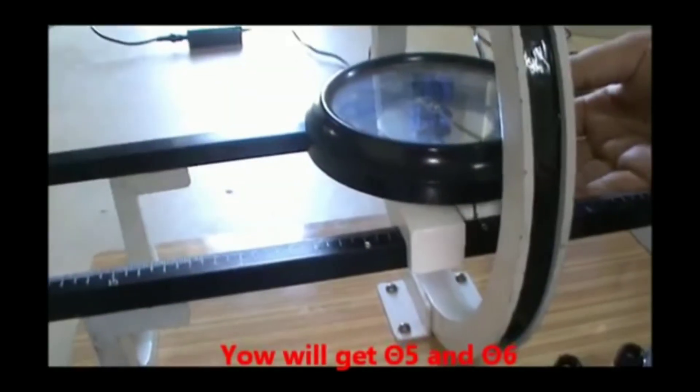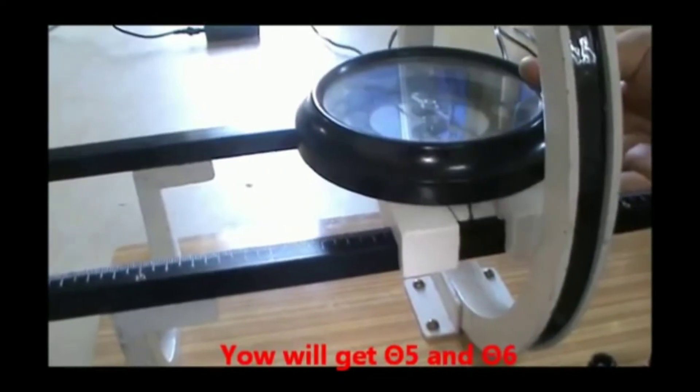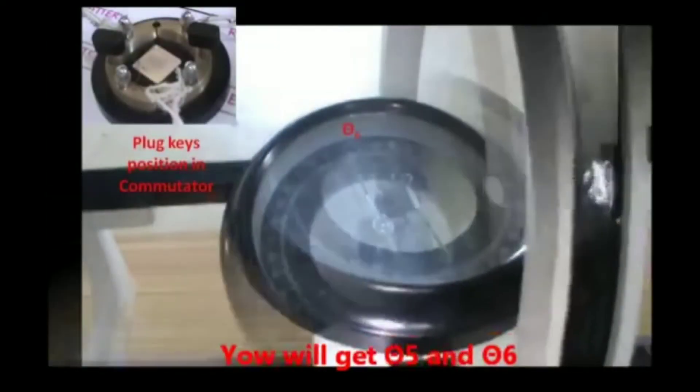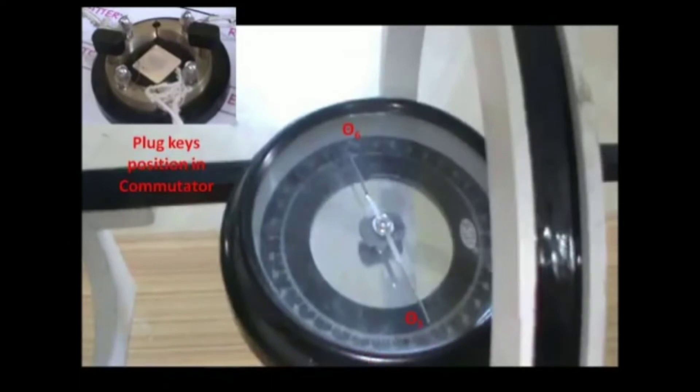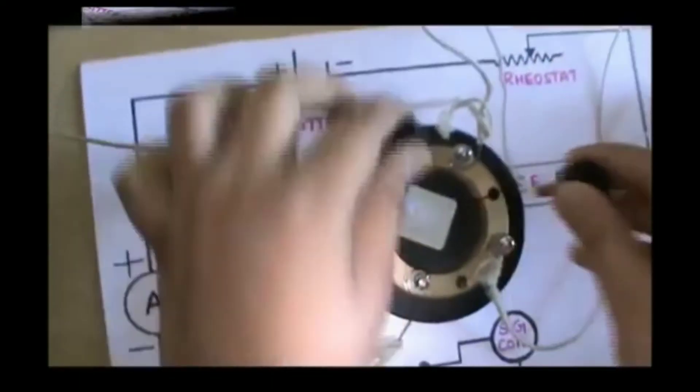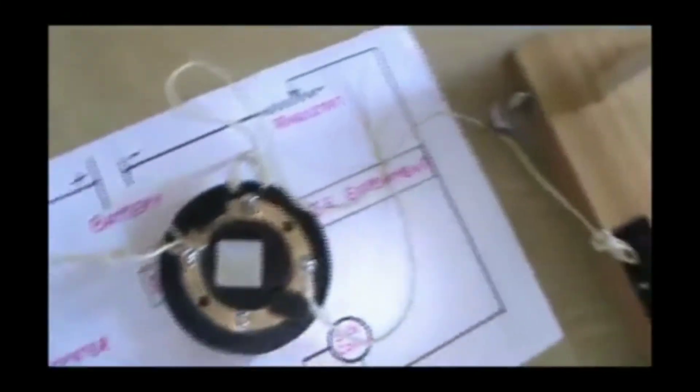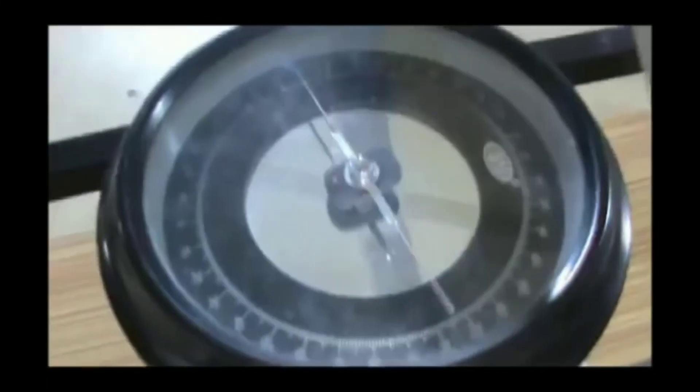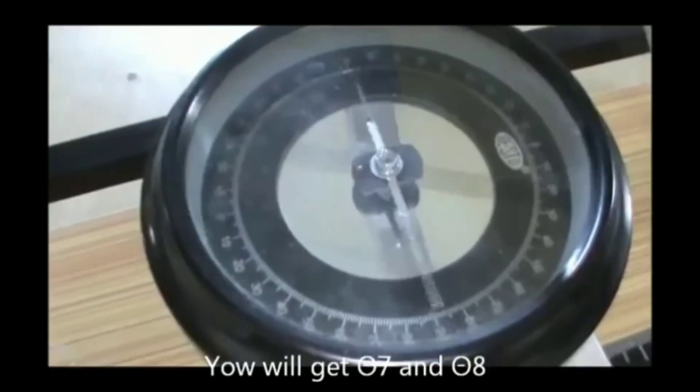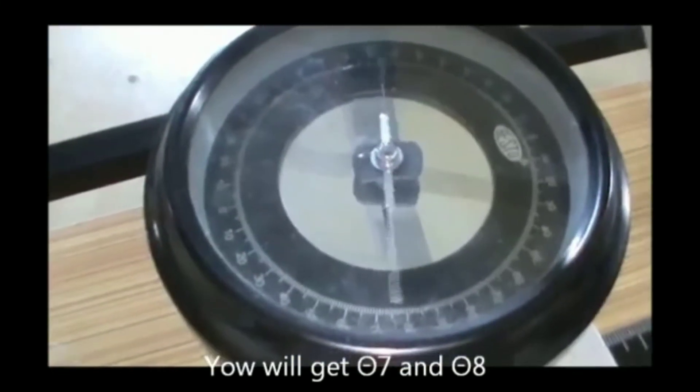Now move the magnetometer towards west side to a distance of 2 cm. You will get theta 5 and theta 6. Interchange the position and note down theta 7 and theta 8.